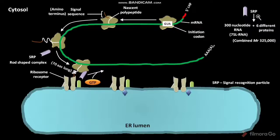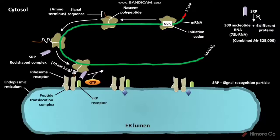The GTP-bound SRP then directs the ribosome and incomplete polypeptide to GTP-bound SRP receptors present in the cytosolic face of the endoplasmic reticulum. On the surface of the endoplasmic reticulum, a peptide translocation complex is present. The peptide translocation complex interacts directly with the ribosome, and the nascent polypeptide is then delivered to it.